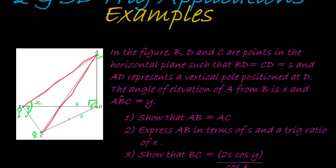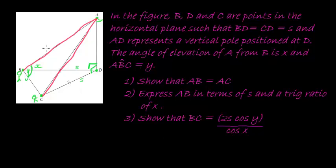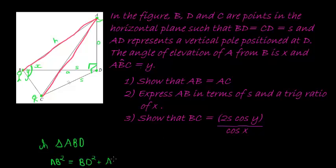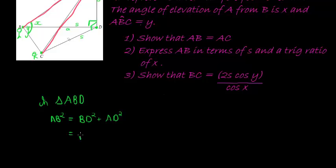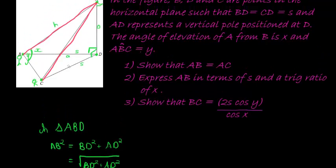Both triangles share side AD, both have the given equal distances BD and CD, and both are 90-degree triangles. So in triangle ABD, AB squared equals BD squared plus AD squared, which means AB equals the square root of BD squared plus AD squared. Now let's represent AC similarly: AC squared equals AD squared plus CD squared, so AC equals the square root of AD squared plus CD squared.